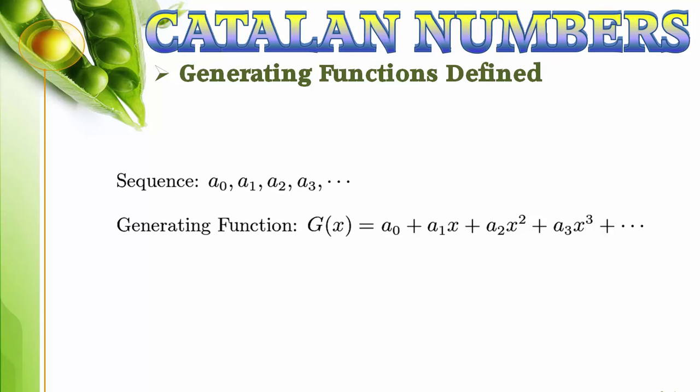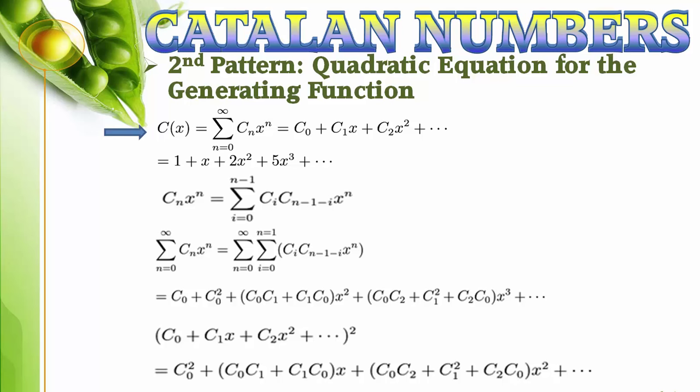The generating function C of x for the Catalan numbers is C sub 0 plus C sub 1 times x plus C sub 2 times x squared plus C sub 3 times x cubed, and so on, or 1 plus x plus 2x squared plus 5x cubed, et cetera.